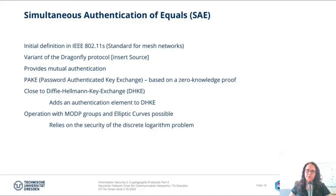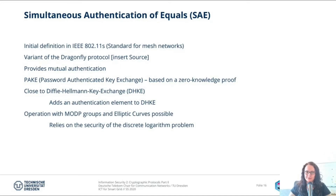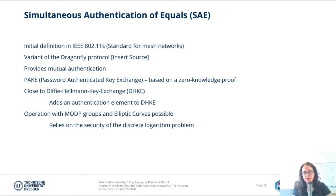The Simultaneous Authentication of Equals — short SAE — was initially defined in IEEE 802.11s, the standard for mesh and ad-hoc networks. It is a variant of the Dragonfly protocol and provides mutual authentication. It uses a PAKE — a password authentication key exchange — which is based on a zero-knowledge proof. A zero-knowledge proof ensures that both parties know a common secret, but neither party has to send the secret to the other. We send something that shows the other party we know the common secret, but not the secret itself.